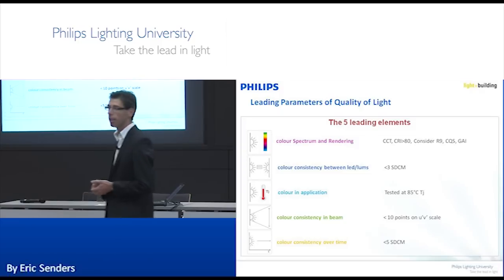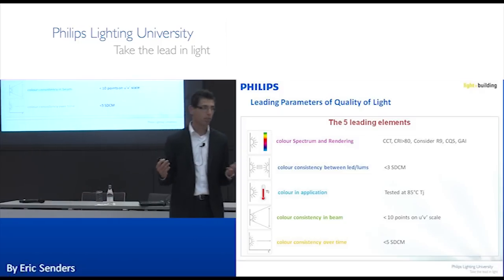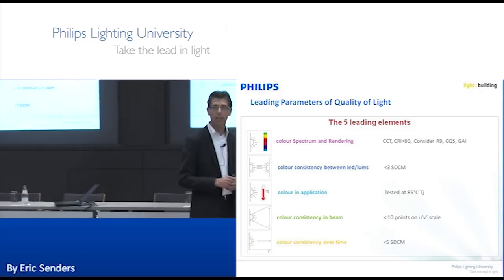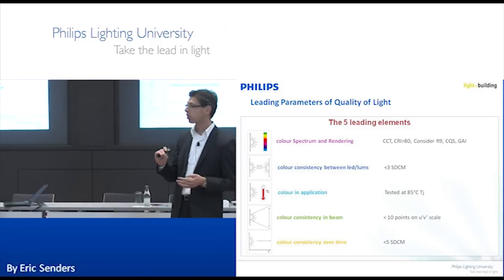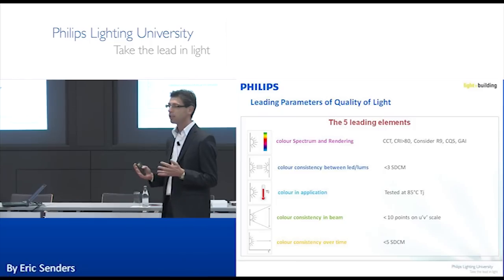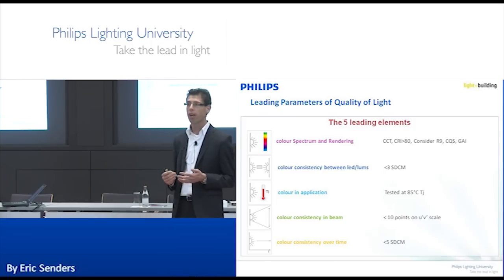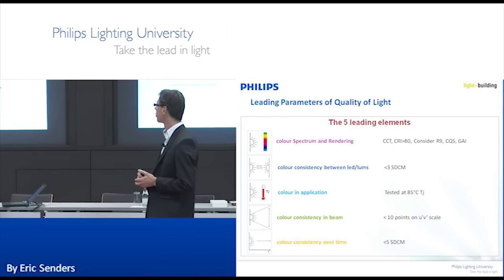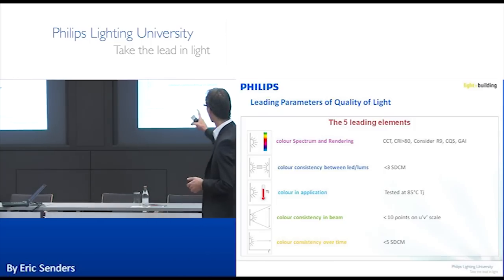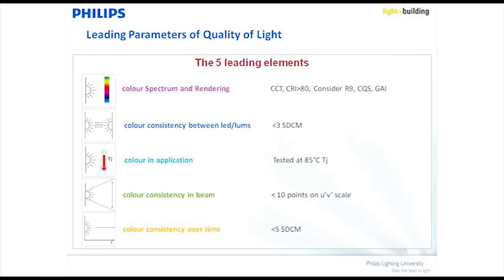We at Philips Lumileds have tried to make quantitative measurements to qualify those five elements of quality of light. For color spectrum and rendering, we talk about CRI, GAI, and various specifications — that's the color rendering element we try to capture in the first quality-of-light parameter.